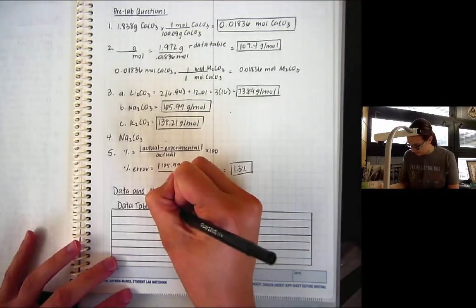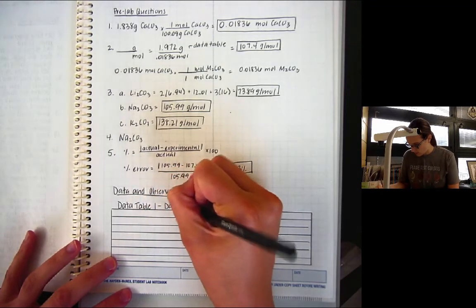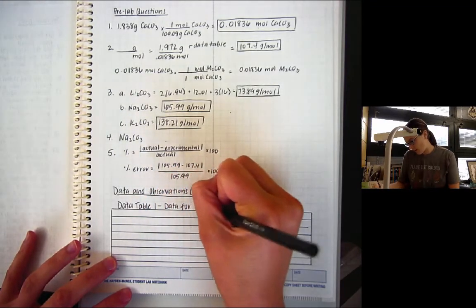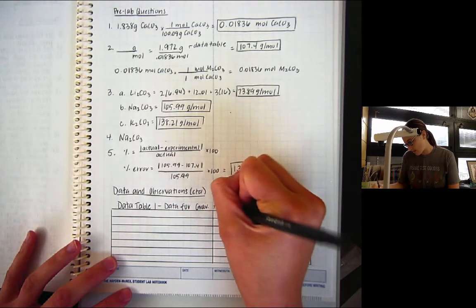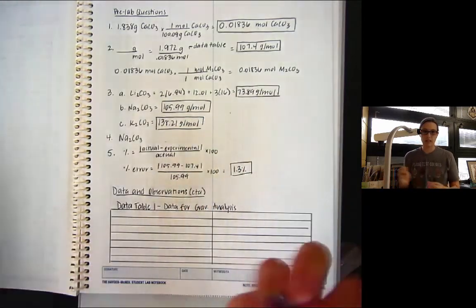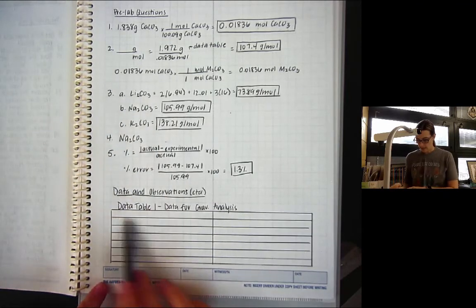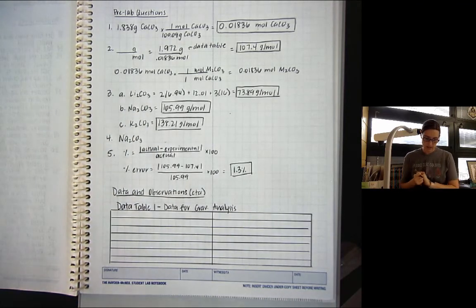So, I'll make this say, data for gravimetric analysis. Right? Something like that. And then I'm going to go ahead and I'm going to put each row of my data table in here. Now, if you want to make it look like the data table from the lab, that's okay.